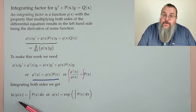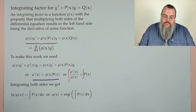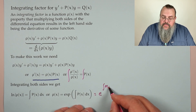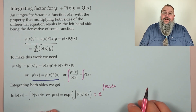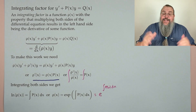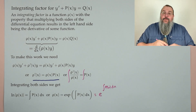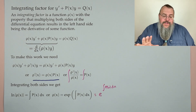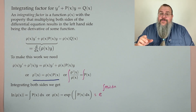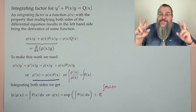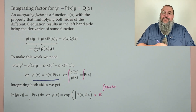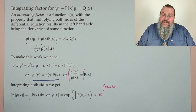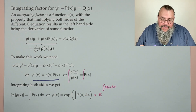To get ρ out of the log, use the exponential function: ρ(x) = exp(∫p(x)dx), or e^(∫p(x)dx). One small detail — when we integrate to find ρ, we don't need to worry about the +c constant.